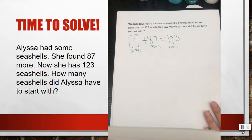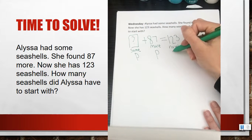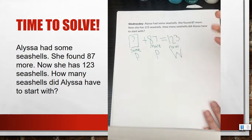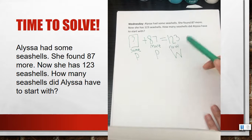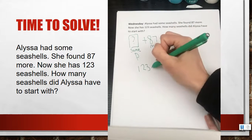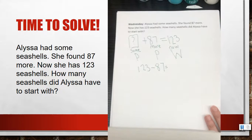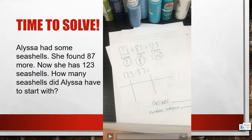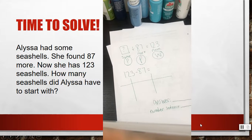What I need to think about here is if I'm missing my part or my whole. When I add, I have a part and another part, and I put them together to make my whole. So I'm missing my part. When I'm missing my part, I need to subtract because I already have my whole. So here I need to subtract 123, my greater number, take away 87.